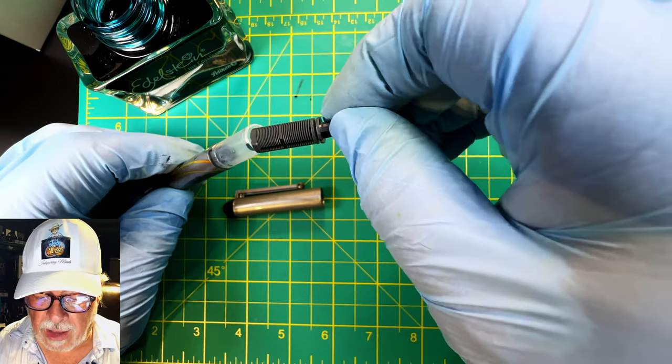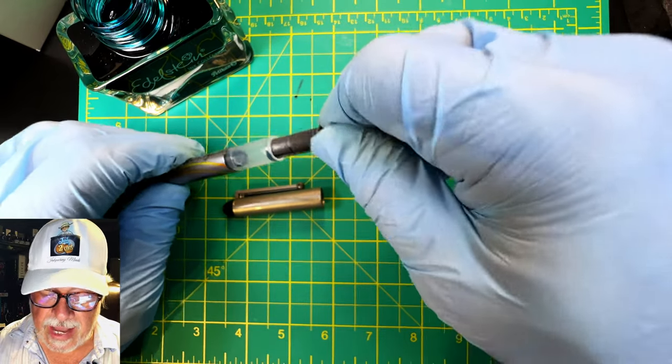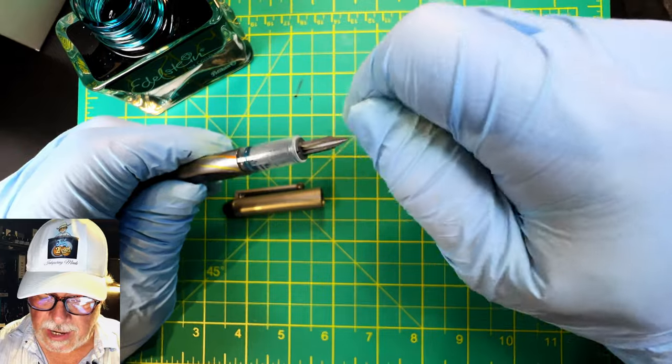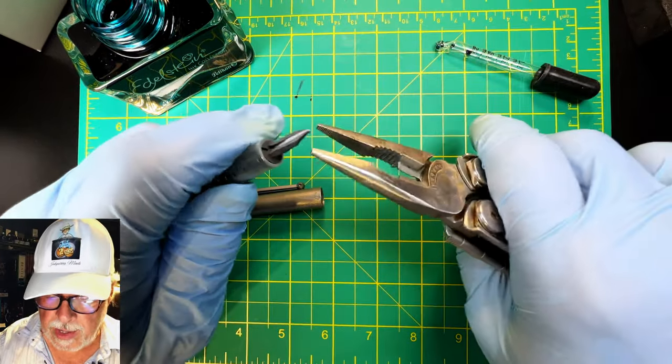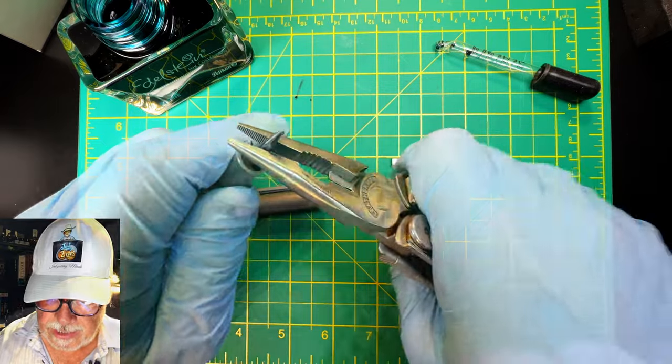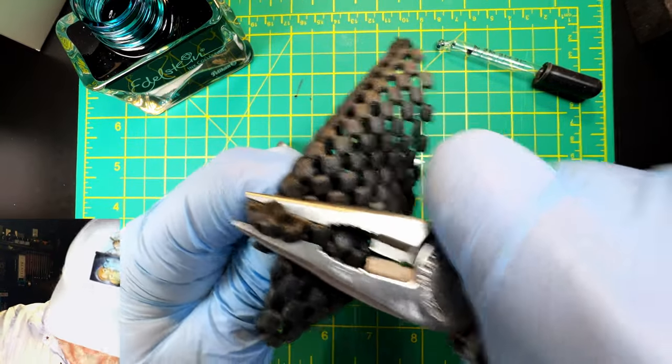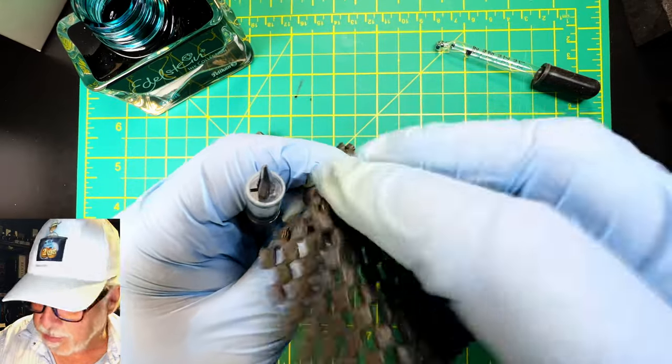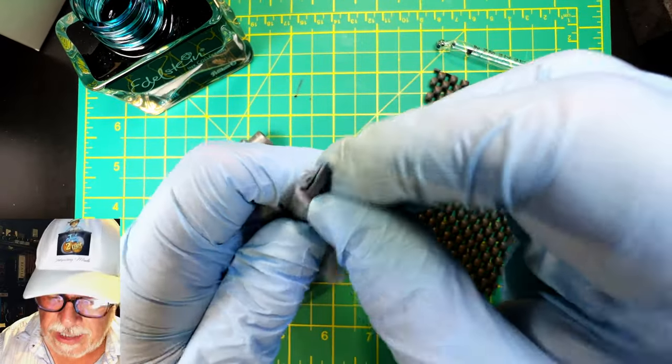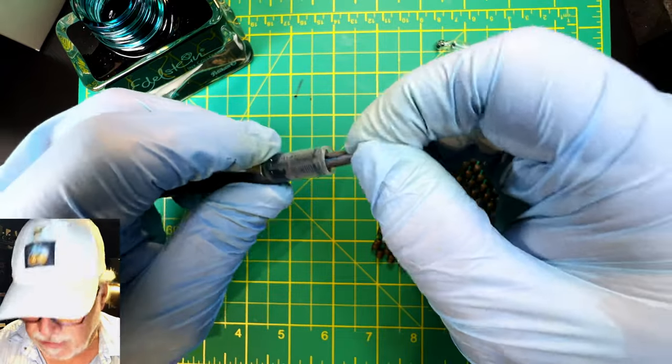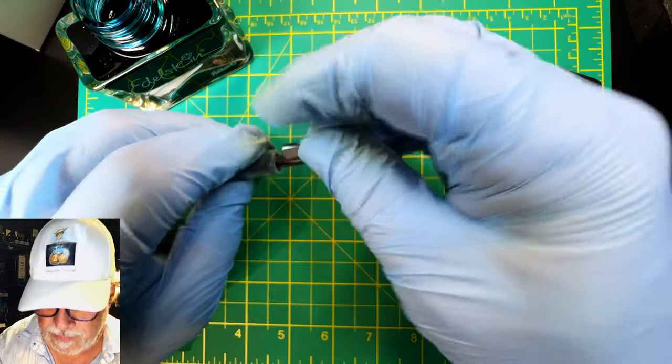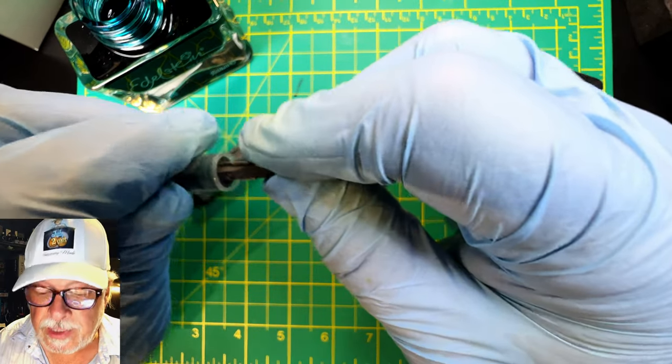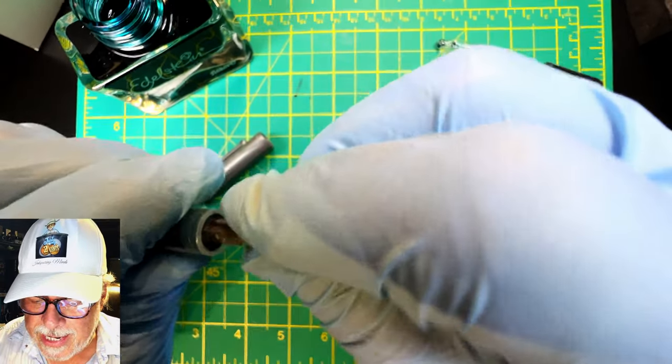So all we have to do now is seat that feed down into the pen and you just press on it until it clicks. I'm going to use my pliers again, just wrap my rubber around there and put my pliers around that and just gave it a push until you get that positive click. Now we just have to grab our nib and slide it onto that feed and give it a push. There we go.